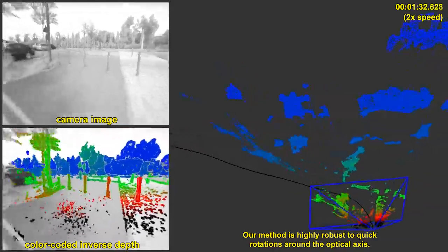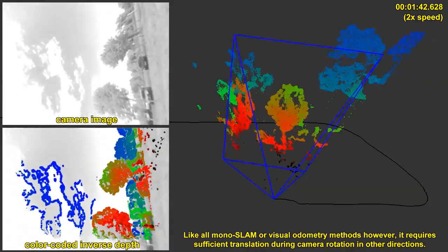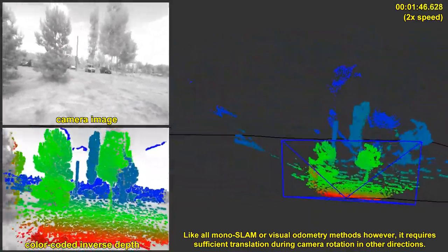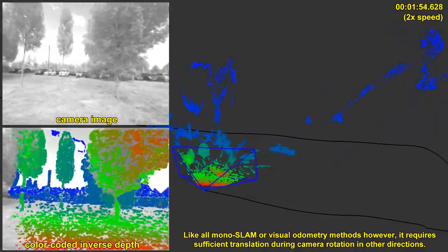Our method is highly robust to quick rotations around the optical axis. Like all monocular SLAM or visual odometry methods however, it requires sufficient translation if the camera is rotated in other directions.